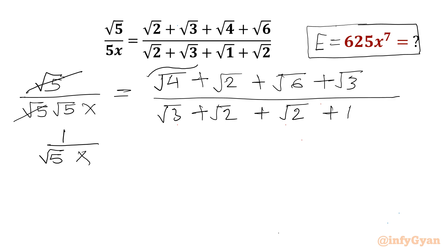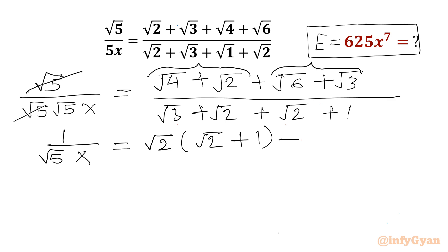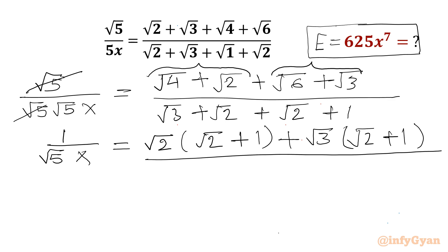From the first two terms in the numerator I can take root 2 common, and from the next two terms I can take root 3 common. So root 2 is factored out giving root 2 times (root 2 plus 1), and root 3 is factored out giving root 3 times (root 2 plus 1). The denominator is root 3 plus root 2 plus root 2 plus 1.